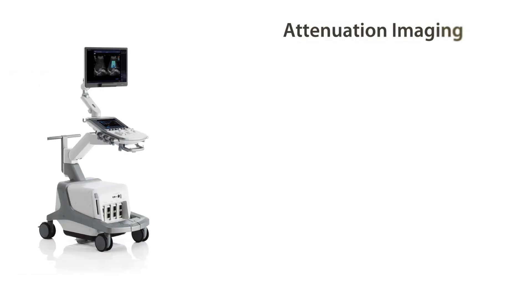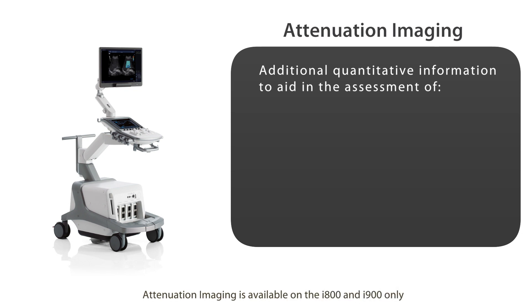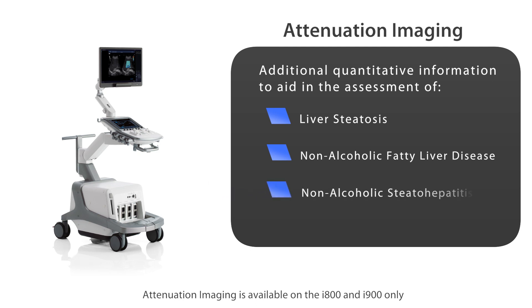Attenuation imaging is a new and unique ultrasound technology from Canon Medical on the Aplio i-Series. It can provide additional quantitative information to aid in the assessment of liver steatosis, non-alcoholic fatty liver disease, and non-alcoholic steatohepatitis, which are all characterized by elevated levels of fat accumulation in the liver. It does this by providing a real-time display and quantification of the ultrasound attenuation coefficient, which increases as the amount of fat in the liver increases.